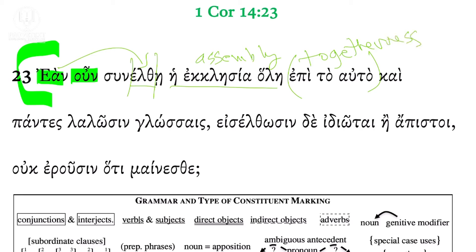Kai — 'and' — so here we have something else added. Pantes is a subject, lalōsin — 'and all speak' — both of those are single underline. Lalōsin is from laleō; this is also subjunctive, so it's also governed by ean. This is a compound ean clause. So ean means 'if,' setting up a conditional sentence with two 'if' parts: if the whole church comes together and all speak in tongues or languages.